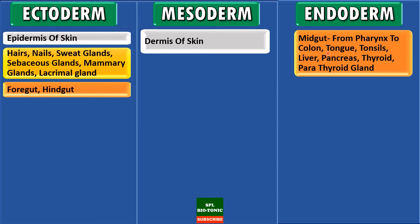There are various structures associated with the midgut such as tongue, tonsils, liver, pancreas, and other endocrine glands such as thyroid and parathyroid gland — they all arise from endoderm.